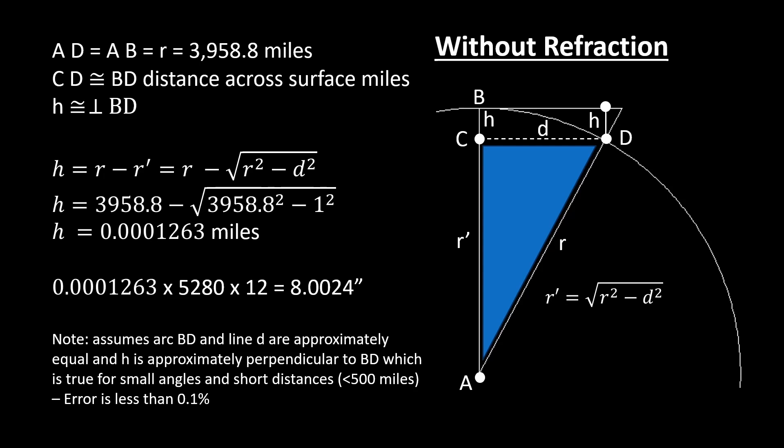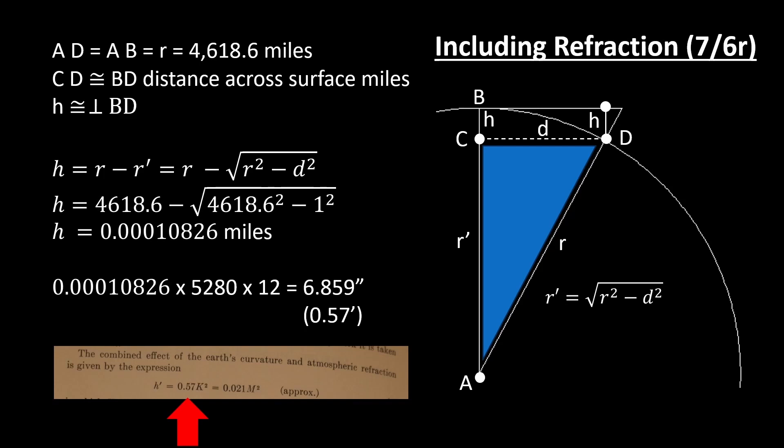Of course, when we're looking through an atmosphere there is refraction, and refraction causes the light to bend down. That means objects you see in the distance appear to be a little bit higher than they actually are — it has the effect as if the Earth had a larger radius. A frequently used number is 7 over 6 R. So if we take the actual radius of the Earth, 3958.8, times 7 divided by 6, you end up with 4618.6. Plugging that number in, we find the drop is going to be 6.859 inches times the distance in miles squared — that's 0.57 feet. And that's exactly what the textbook said.